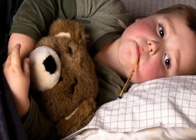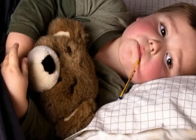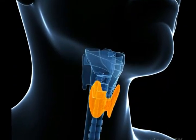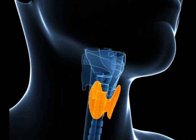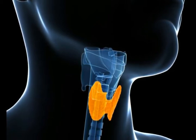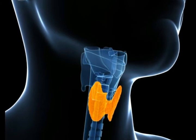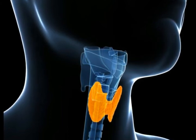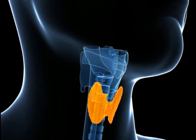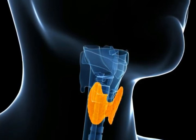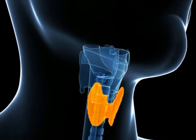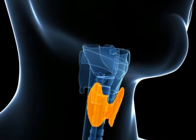The negative feedback process is sometimes compared to a house heating system, where temperatures above a certain level are detected by a thermostat. This switches off the heating until the temperature falls below a minimum threshold, when the heating switches on again. Negative feedback leads to hormone production switching on and off, creating pulses of hormone secretion, meaning that blood hormone levels rise and fall cyclically within a relatively narrow normal range.